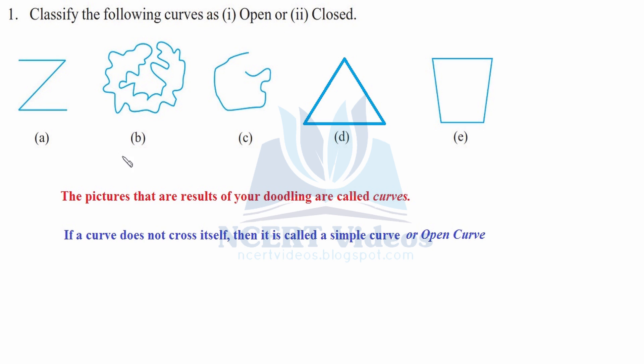Pictures that are result of your doodling are called curves. Doodling is something made in random or without any proper attention, something that you make with an absent mind. Now if a curve doesn't cross itself then it is termed as simple curve or open curve.